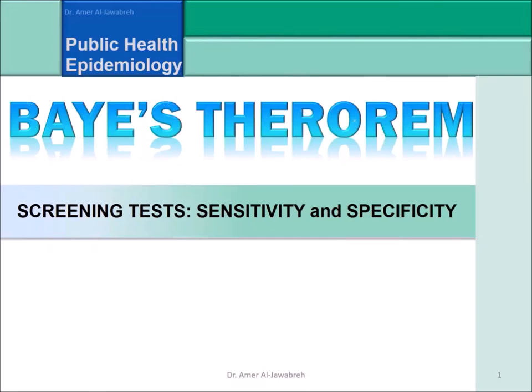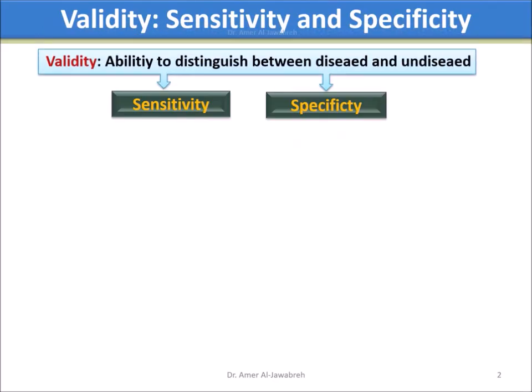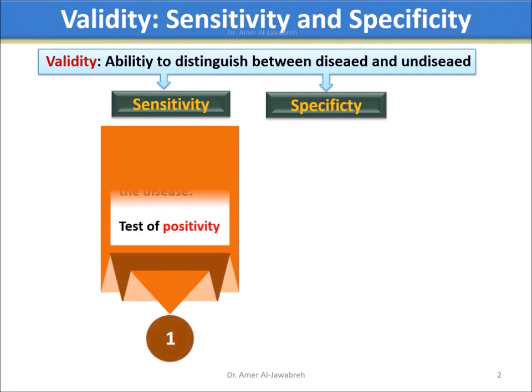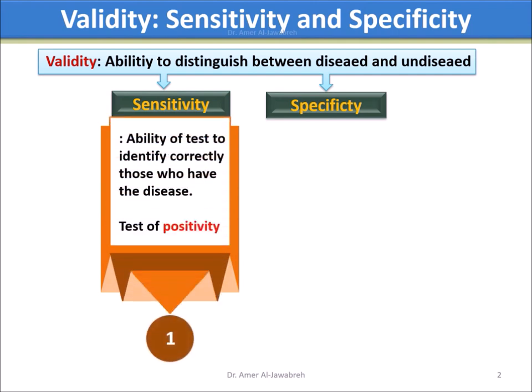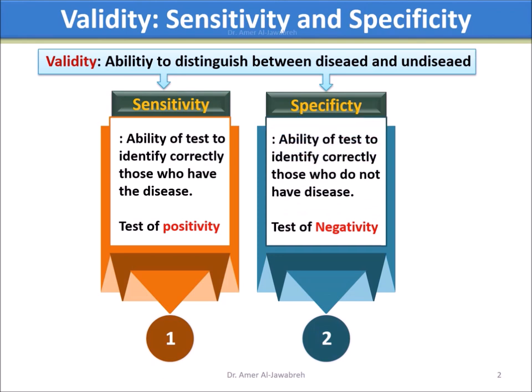Bayes' Theorem: Screening Test Sensitivity and Specificity. Validity is the ability to distinguish between diseased and undiseased. Sensitivity is the ability of a test to identify correctly those who have disease — it is a test of positivity. Specificity is the ability of a test to identify correctly those who do not have disease — it is a test of negativity.